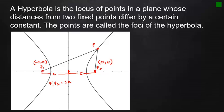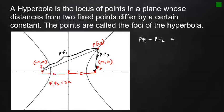Let this be point P with coordinates (x, y). From the given definition, we can say that the segment from P to F₁, minus the segment from P to F₂, equals a common difference. In symbols: PF₁ − PF₂ equals a common difference, and we let that common difference equal 2a. Using 2a will make the derivation a lot simpler.